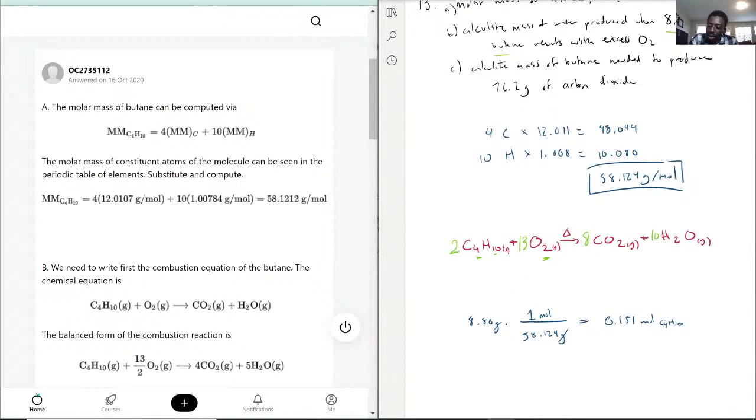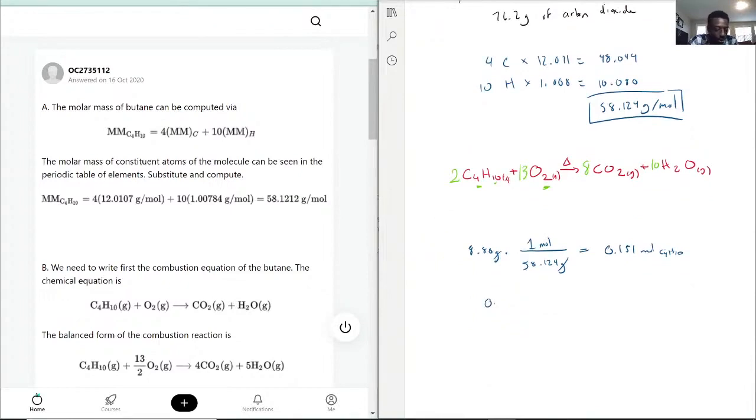Now that we have that, they're asking the mass of water. So not only do they want H2O, they want the mass of it. So we convert again. 0.151 moles of C4H10, and we know what we have which is C4H10, so to cancel that we need it in the denominator. For every two moles of C4H10 based on our balanced equation, we have 10 moles of H2O. So you're really just multiplying by five.